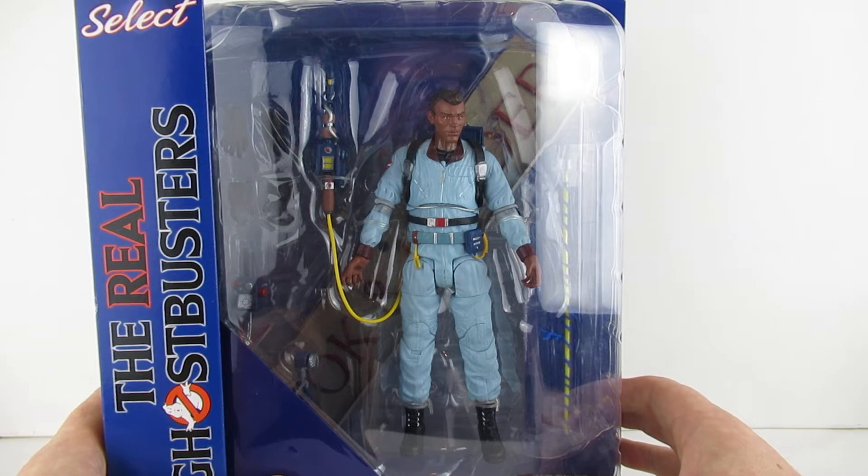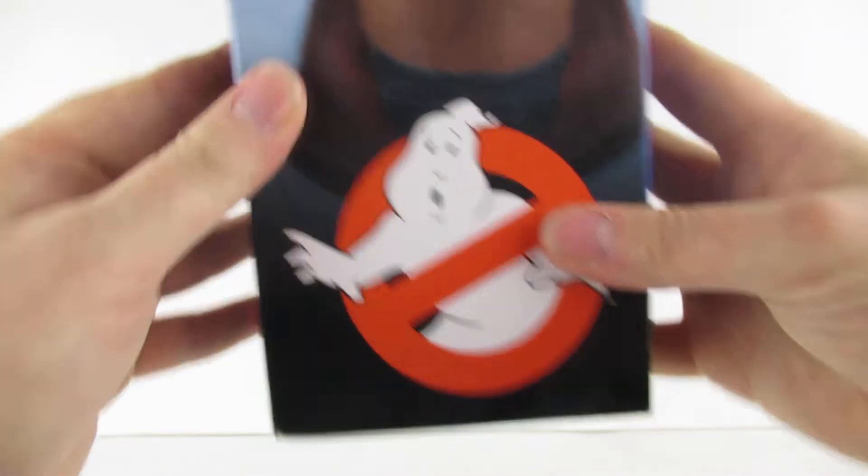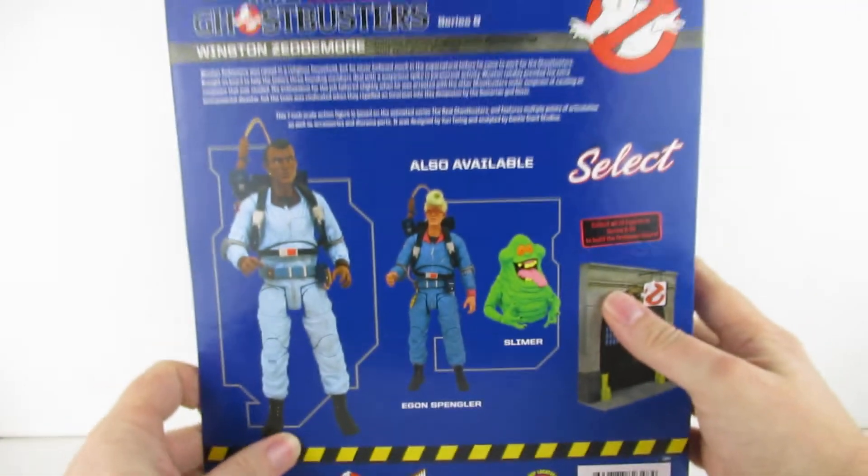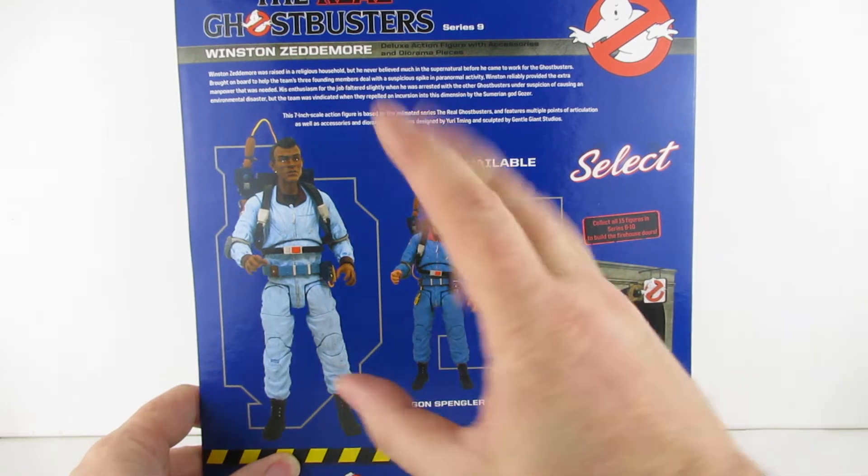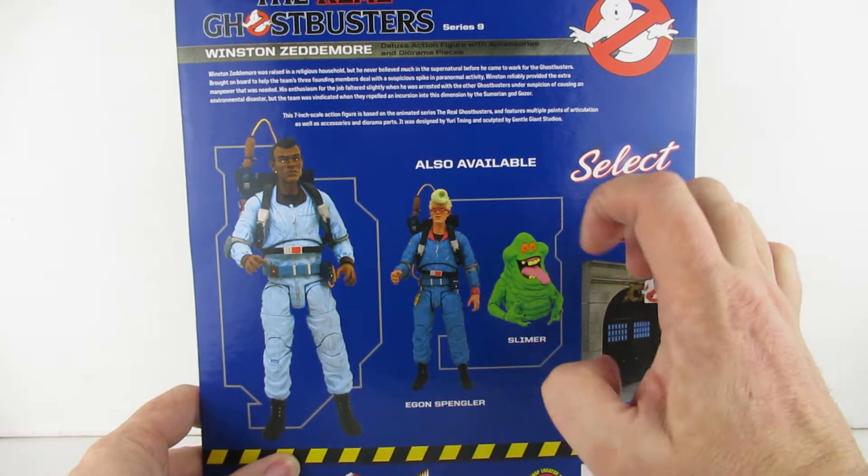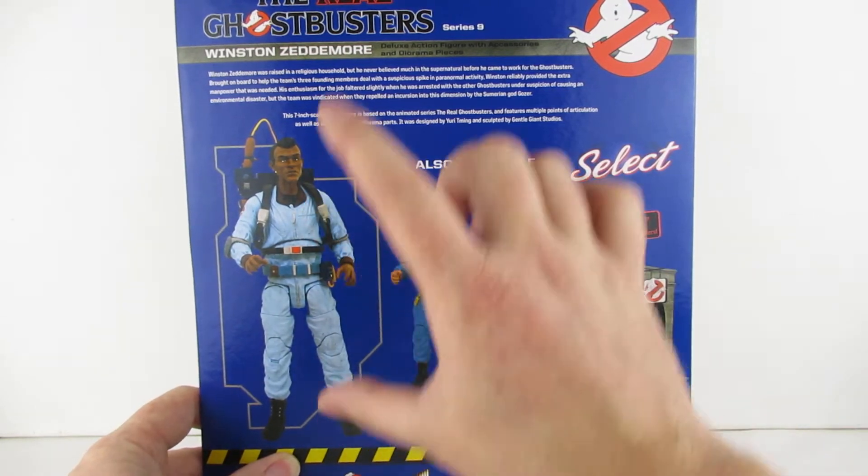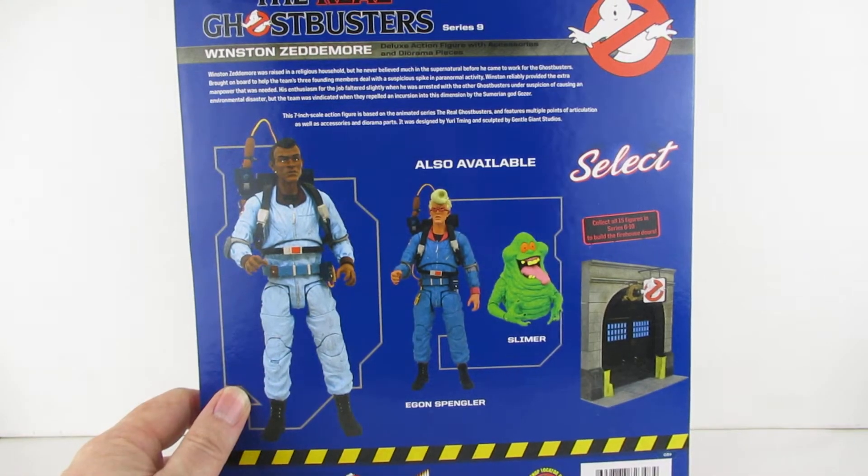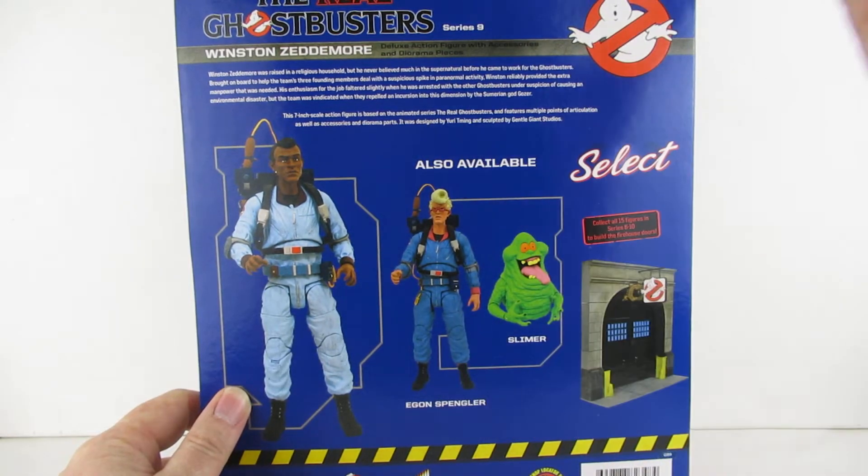So there we have him in his packet. We have image on the side there with the Ghostbusters logo at the bottom. On the back also available Egon, Slimer. They didn't have Egon, they had Slimer. Slimer is a very weird scale. He seems very small but then he has to be because these, you know what I mean. I really wanted Egon. Didn't have any.